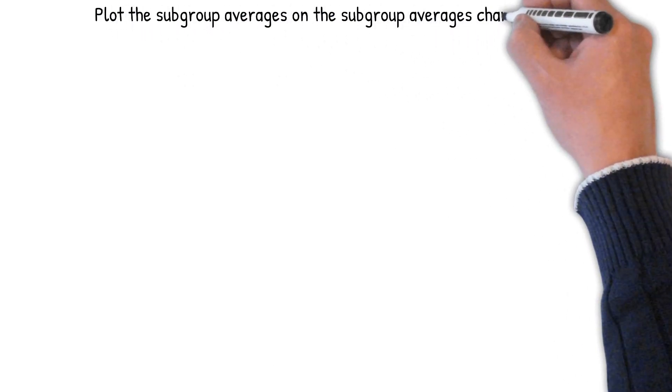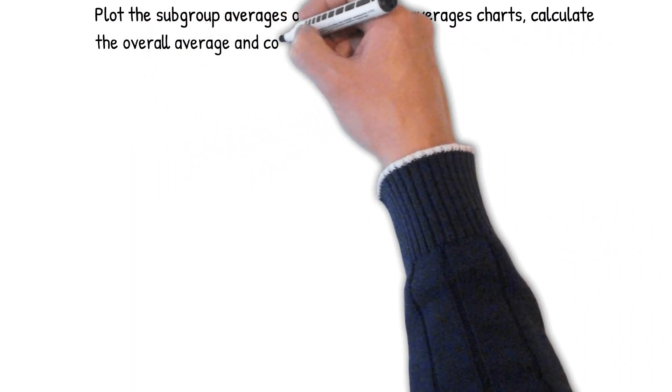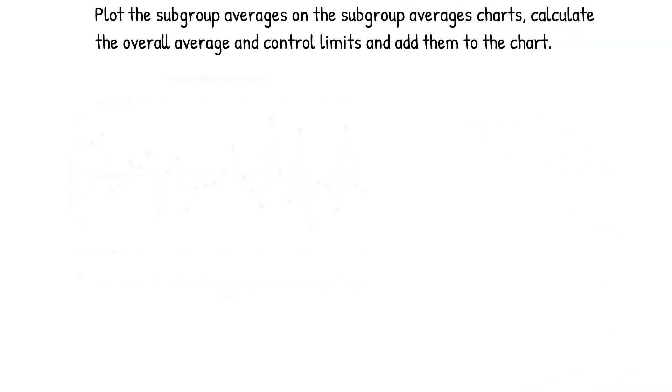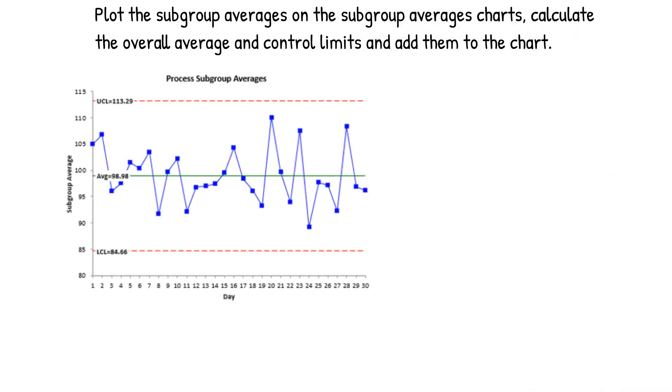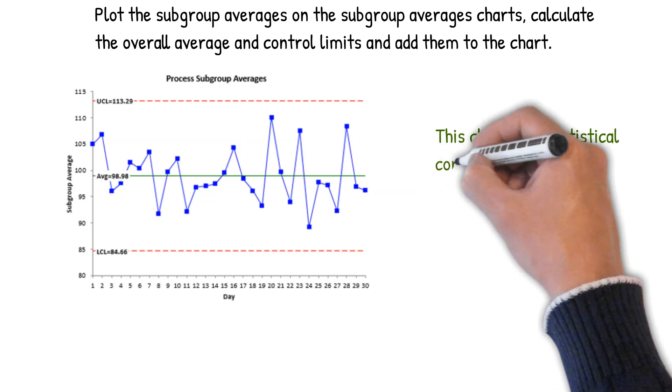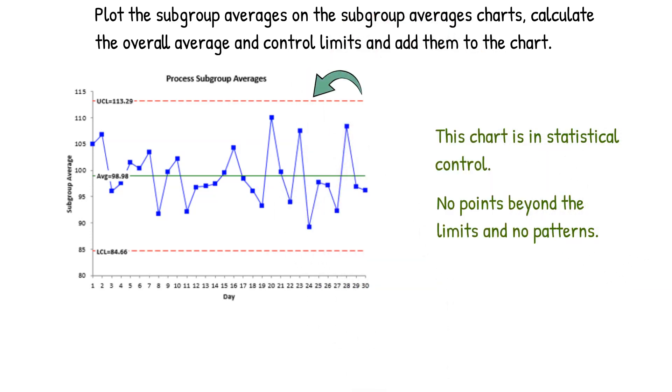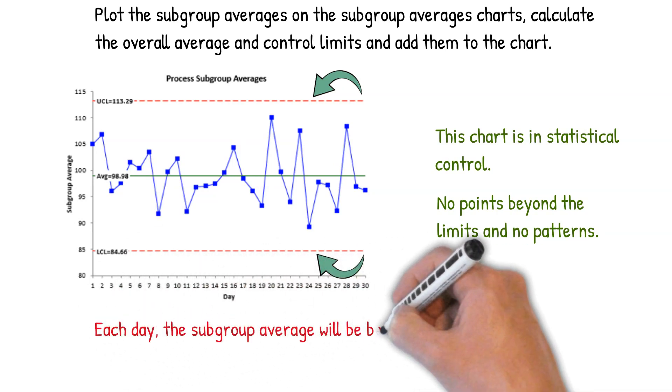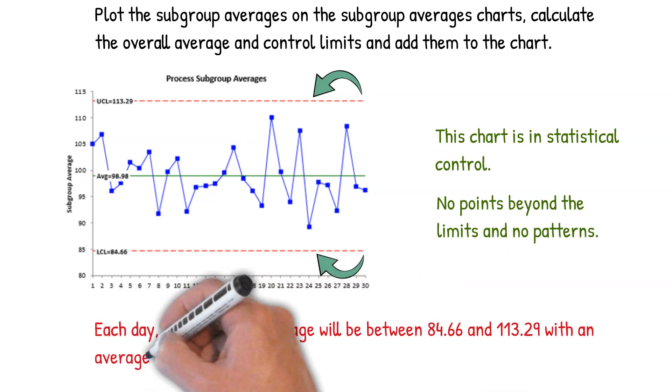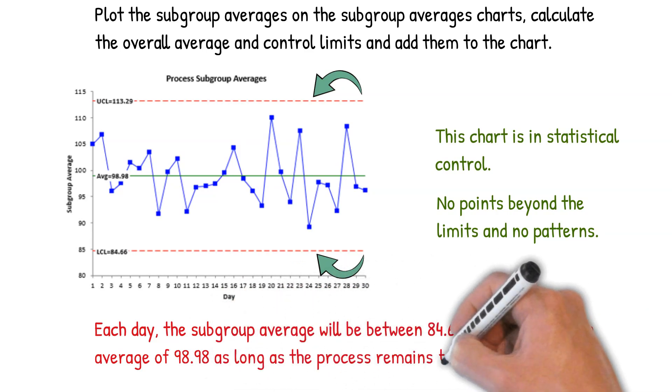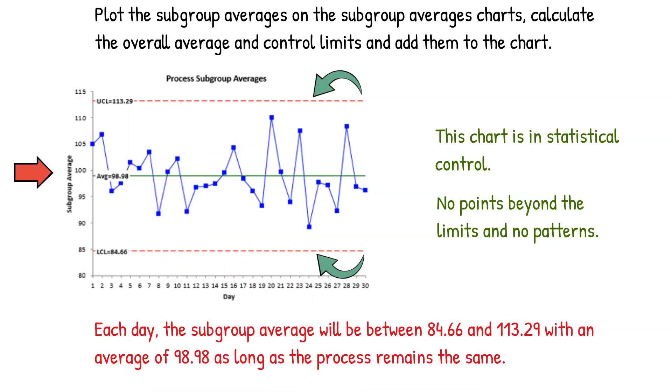Then we're going to plot the results on two charts. First we plot the subgroup averages on the X-bar chart, calculate the overall average and control limits and interpret the chart. This chart is in statistical control. There are no points beyond the limits and there are no patterns. So every day, the subgroup average will be between about 85 and 113 with an average of 99 as long as the process remains the same.